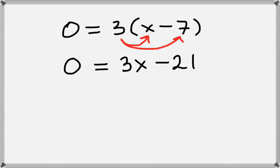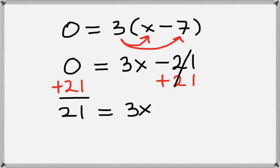Now, what we want to do is get the 3x term by itself, so we'll add 21 to both sides. On the right-hand side, the negative 21 and the 21 cancel, so we're just left with 3x. And on the left, we have 0 plus 21. That just leaves us with 21.